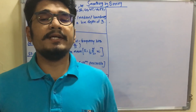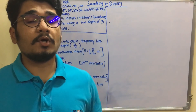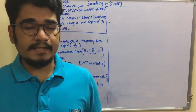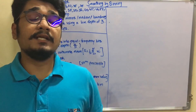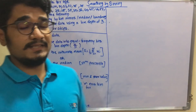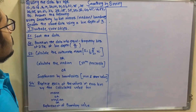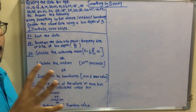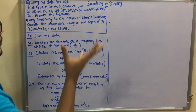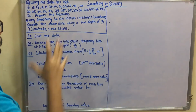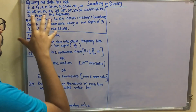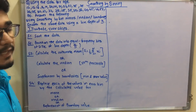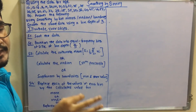Welcome to another video on data mining. In today's video we'll be solving a problem based on smoothing by binning, which is a noise handling technique we covered in our previous video. The problem uses age data and asks us to apply three techniques: bin means, bin median, and bin boundary.